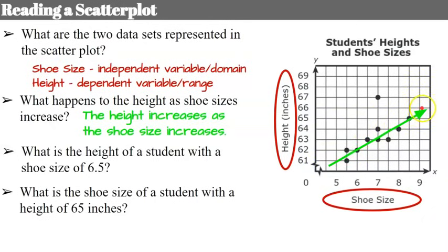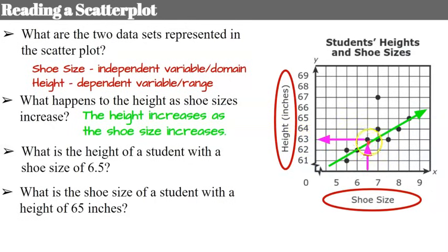I've drawn a trend line to show that as X is increasing, Y is increasing — as shoe size increases, height increases. For example, to find the height of a student with a shoe size of 6.5, we go to 6.5 on the graph — noting the X axis increases by intervals of one half — go up to the data point, then over to the Y axis, and we see that a shoe size of 6.5 corresponds to a height of 63 inches.